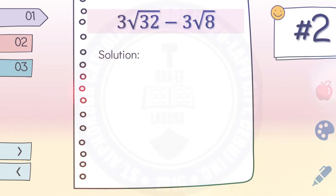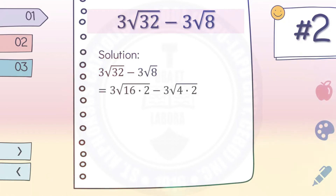Number two: three square root of 32 minus three square root of eight. Since the radicands are not the same, we need to check if they are similar by simplifying each term. Simplifying three square root of 32: that becomes three square root of 16 times two, factoring out the perfect square. On the other side: minus three square root of four times two, since four is the perfect square factor of eight.